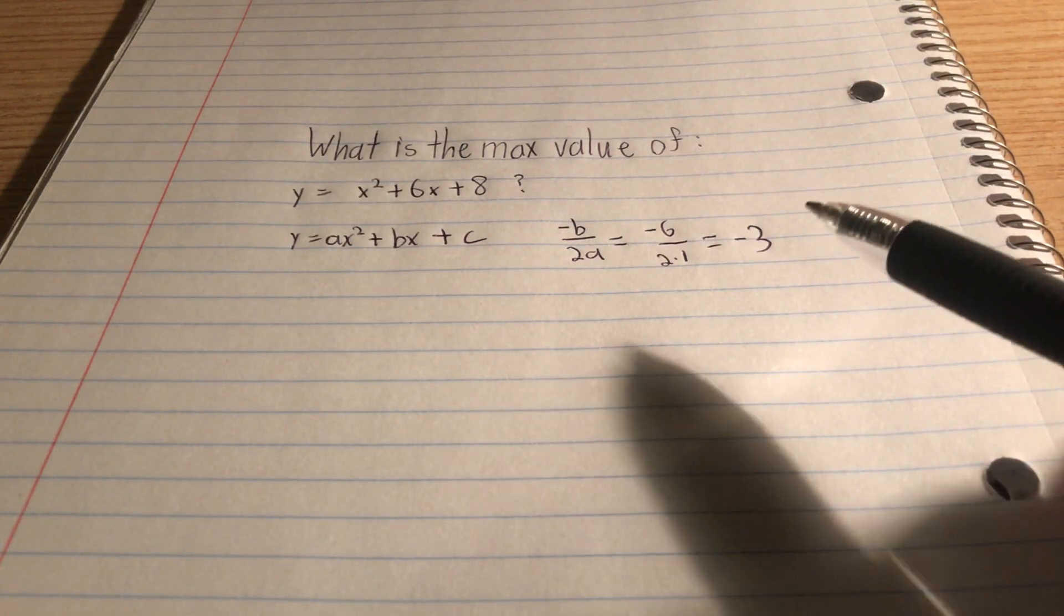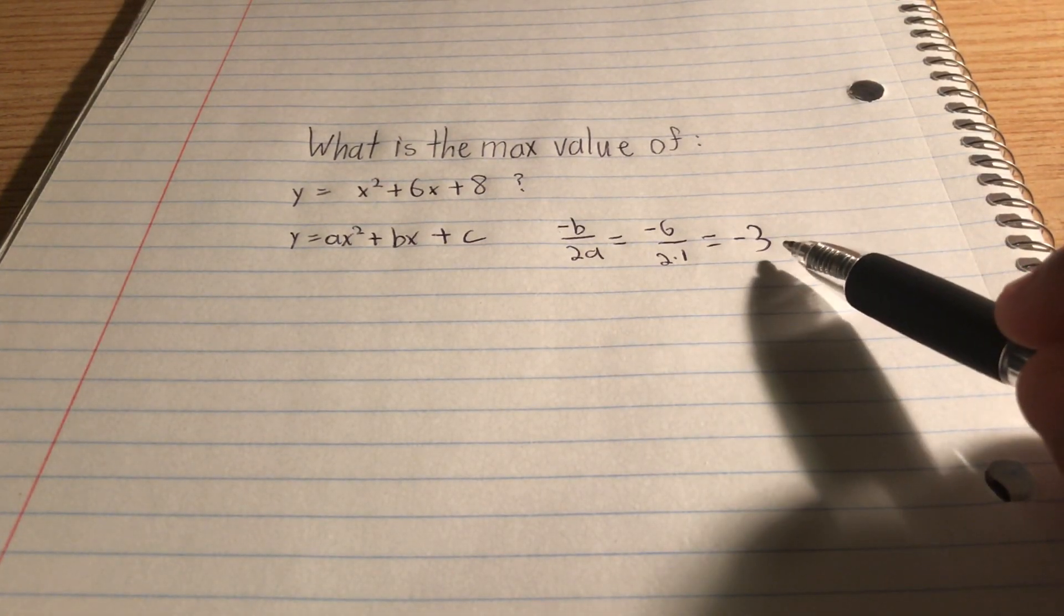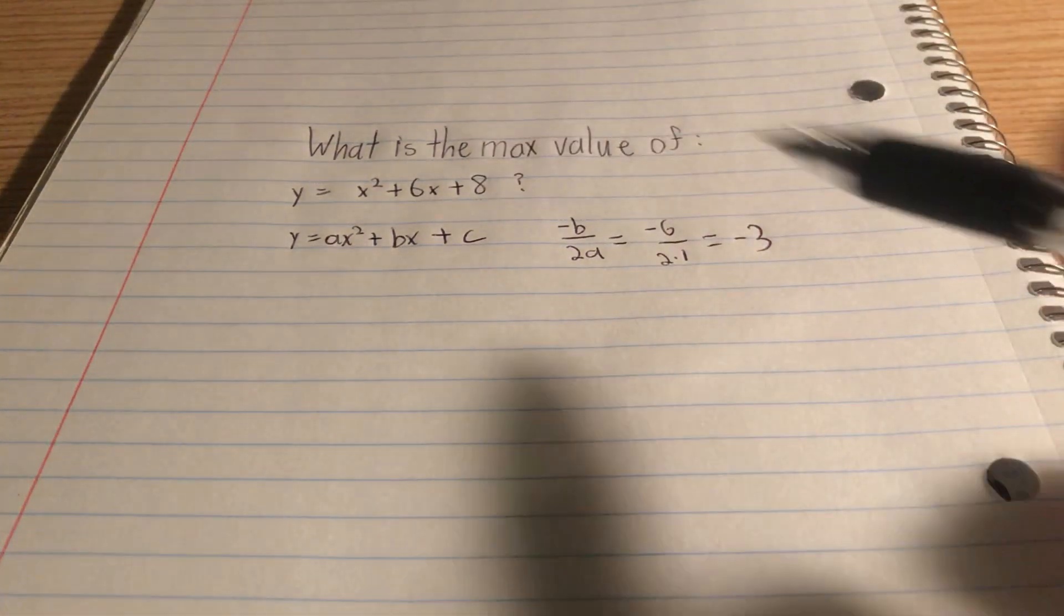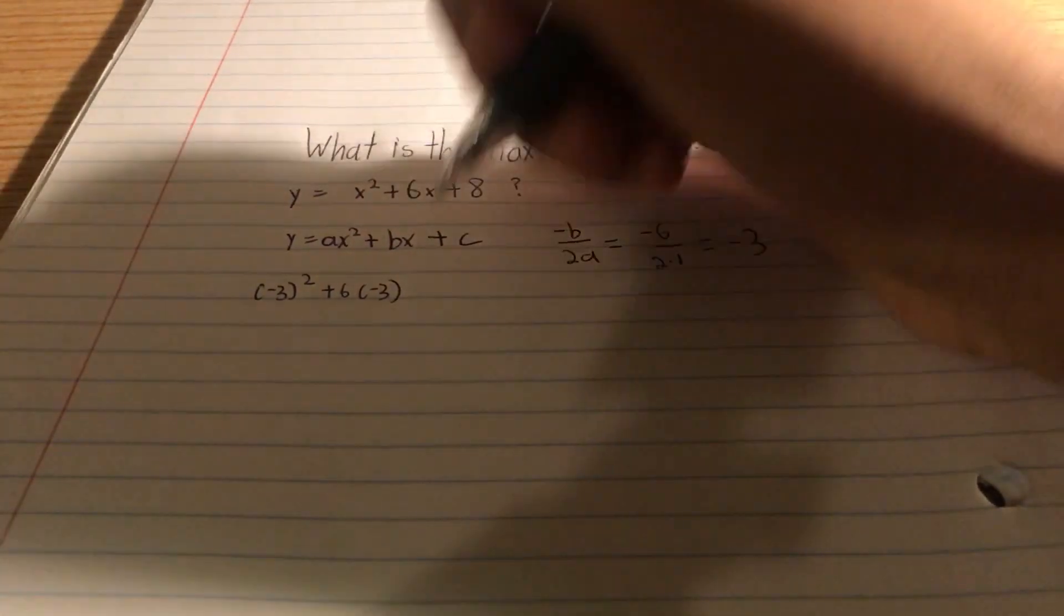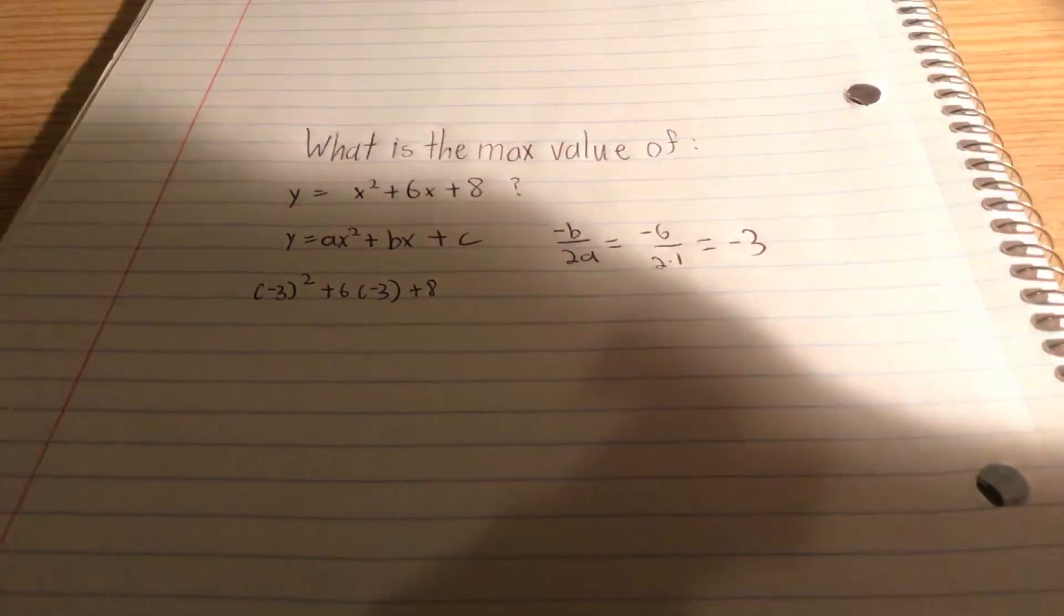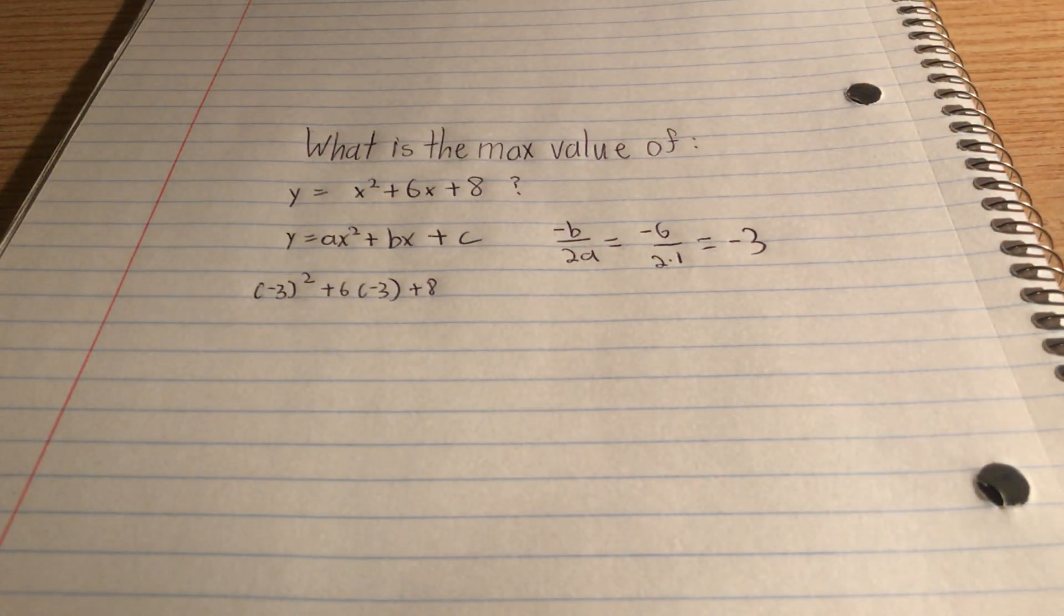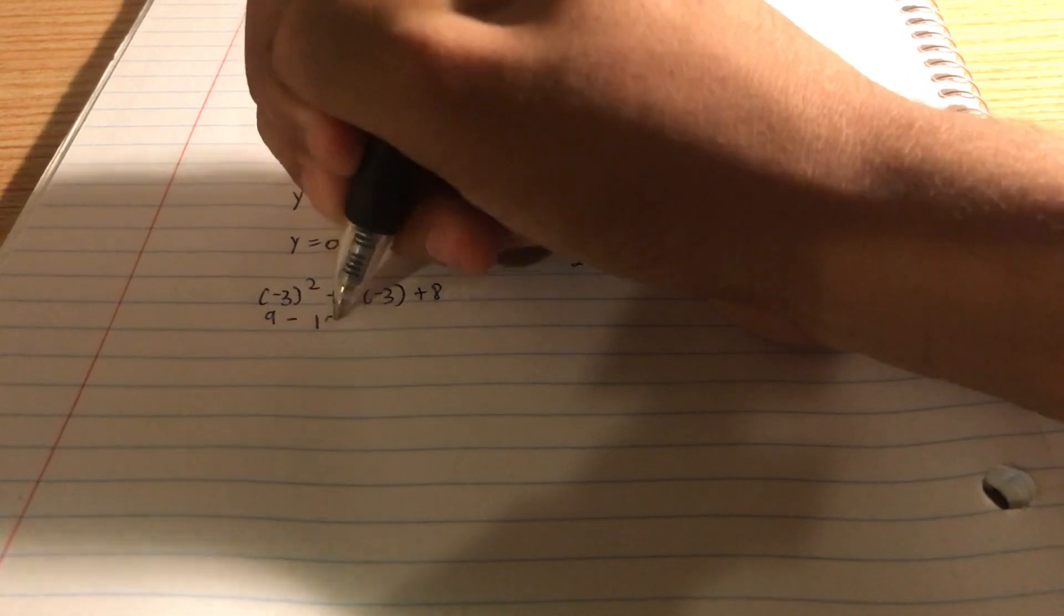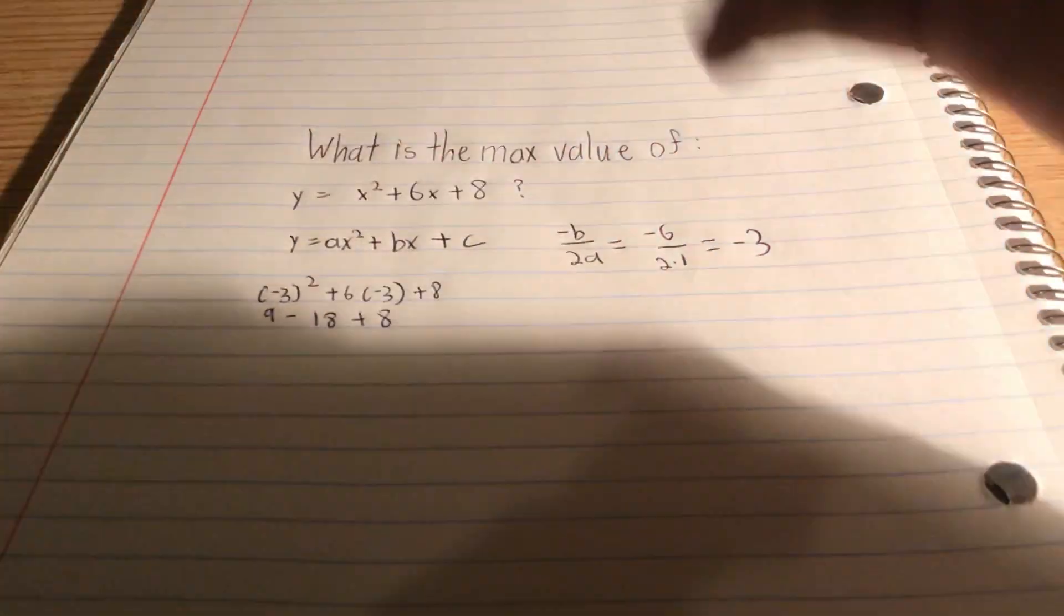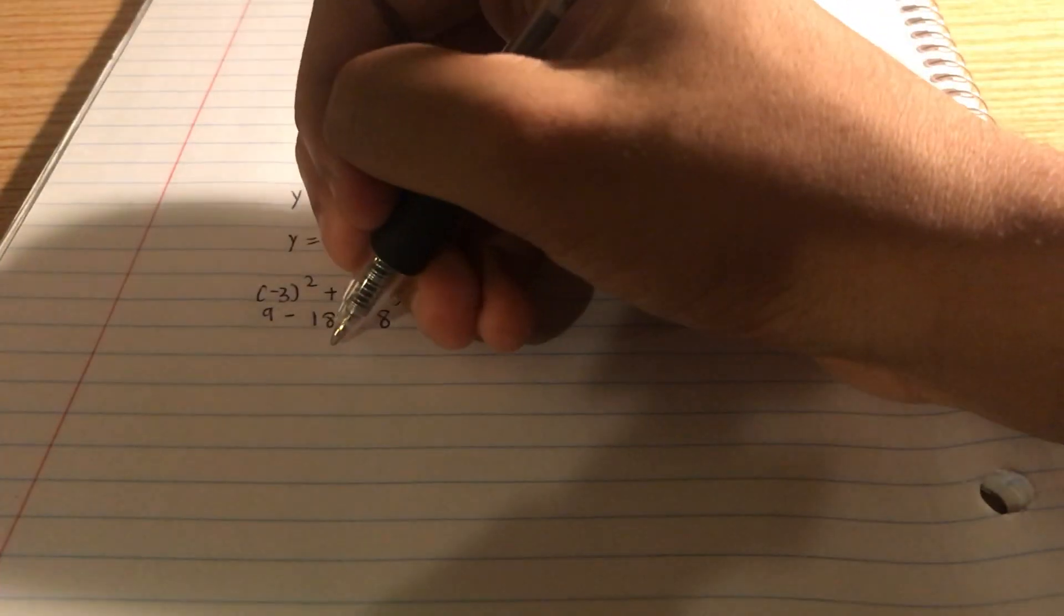So our x value for a maximum value is negative 3. We plug that into here, we get negative 3 squared plus 6 times negative 3 plus 8. So it's just simple arithmetic at this point. So it's just 9 minus 18 plus 8. So it's negative 1.